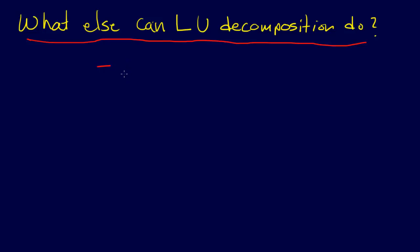One of the things that it can do is it can help find A inverse. It makes it a lot less work to find A inverse if we've done LU decomposition first. It can also help us officially find the determinant of A, the determinant of a matrix A. And another thing that it can do is help us find the condition number of A. And so let's see how.